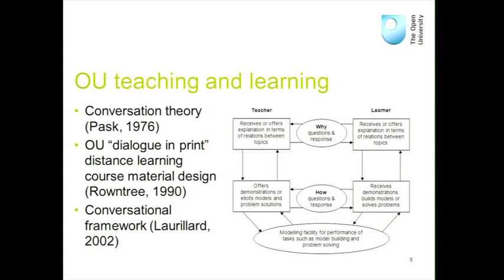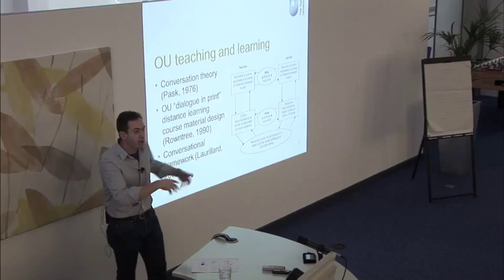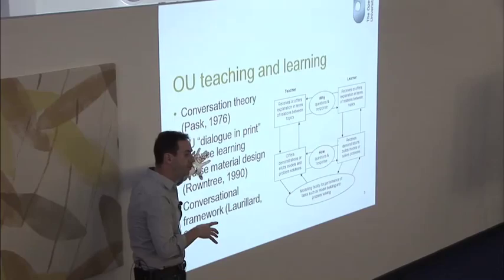At the OU we've distilled that into the dialogue and print model. People like Derek Rowntree, when putting those books together through the 80s and 90s, really used these terms — it was beautiful. The idea is that you're having a dialogue with your print material: you read a section, there's a set of questions that make you reflect, you get a sense of your own understanding. Diana Laurillard, who was here as PVC, put it again as a conversational framework, explaining how the OU teaching process built on this theory of active learning.